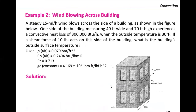Problem: We have wind blowing across a building. A steady 15 miles per hour wind blows across the side of a building. One side of the building measuring 40 feet wide and 70 feet height experiences a convective heat loss of 300,000 BTU per hour when the outside temperature is 35°F. If a shear force of 10 pound-force acts on this side of the building, what is the building outside surface temperature — the T wall?